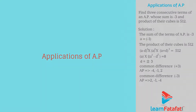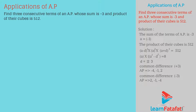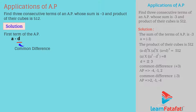Applications of AP. Find three consecutive terms of an AP whose sum is minus 3 and product of their cubes is 512. Solution: Let us take the first term of the AP as a minus d with common difference d. Then the AP can be given as a minus d, a, a plus d.